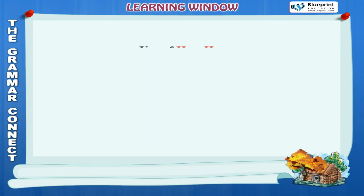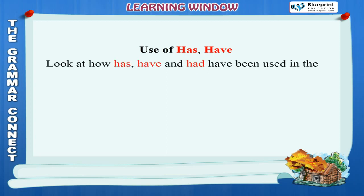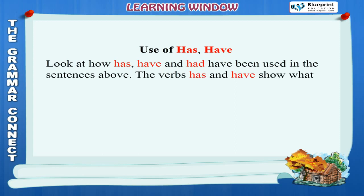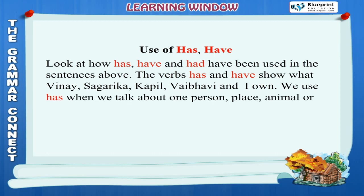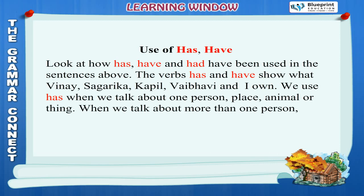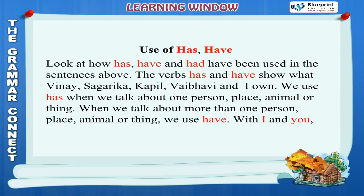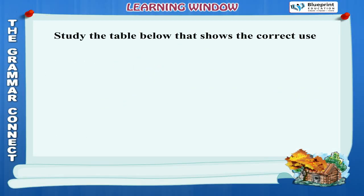Use of has and have: The verbs has and have show what Vinay, Sagrika, Kapil, Vaibhavi and I own. We use 'has' when we talk about one person, place, animal or thing. When we talk about more than one person, place, animal or thing, we use 'have'. With I and you, we always use 'have'. Study the table below that shows the correct use of has and have.